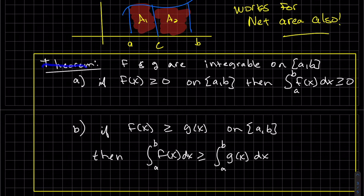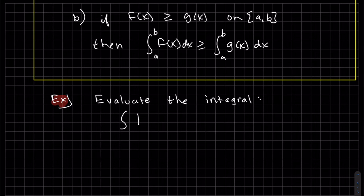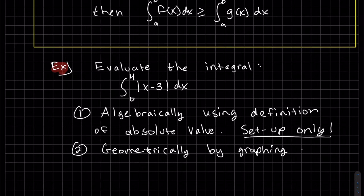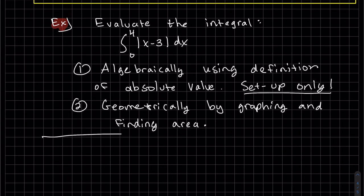This theorem is just pretty basic, but it can be powerful sometimes. We have two functions that are integrable. If the function is greater than zero, then the integral is greater than zero. Basically, the inequality holds across an integral. If F is greater than G on [a,b], then the integral of F is greater than the integral of G.